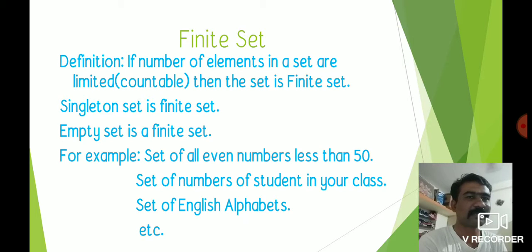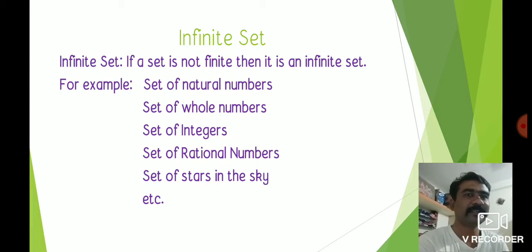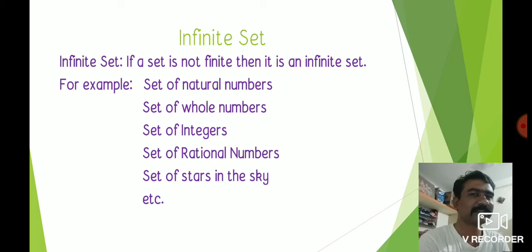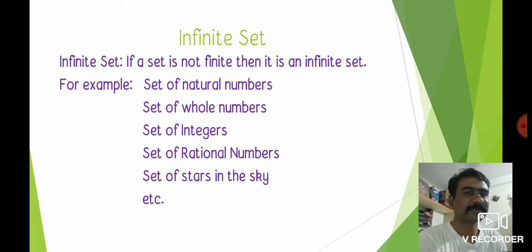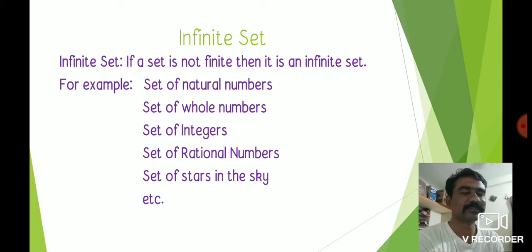Finally: infinite set — if a set is not finite, then it is an infinite set. If the objects of any set are uncountable, then the set is an infinite set. For example: set of all natural numbers, whole numbers, integers, rational numbers — all are types of infinite sets. Also, the set of stars in the sky — we cannot count how many stars, so they are uncountable and this is also an example of an infinite set.